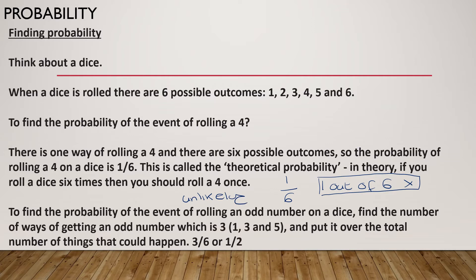Another example: to find the probability of the event of rolling an odd number on a dice, find the number of ways of getting an odd number, which is three. We could roll a one, a three, or a five, and put it over the total number of things that could happen, which are still that we could roll a one, two, three, four, five, or six. So there's three odd numbers out of six possible outcomes. So this is how we express probability.